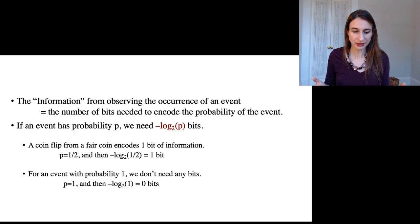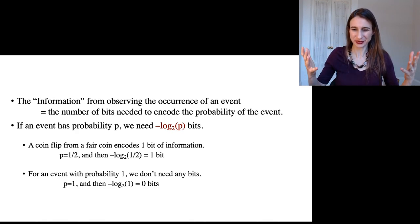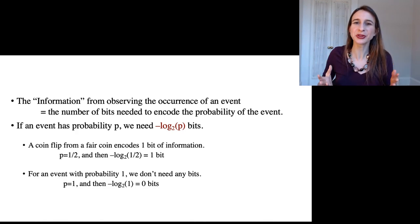If you have an event with probability 1, that doesn't give you any bits of information when you see it happen because you know the event is going to happen anyway. So there's no information from seeing it happen.